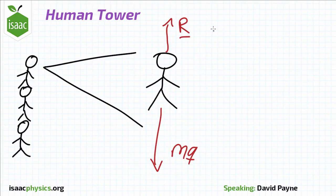For this acrobat to be in equilibrium, the resultant force on him needs to be equal to zero. This means that the reaction force and his weight must be equal and opposite.